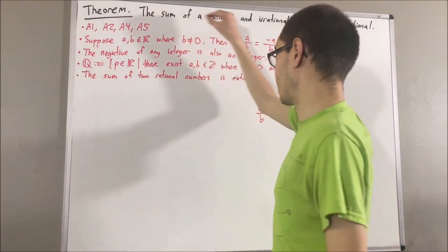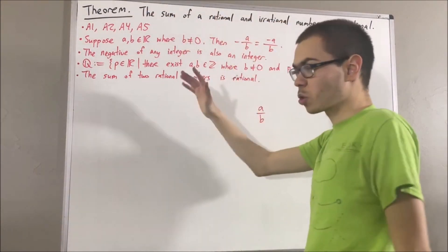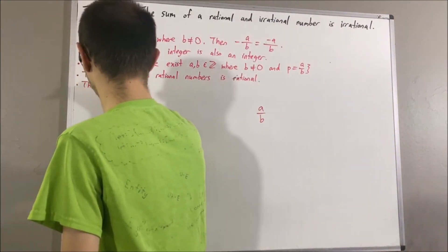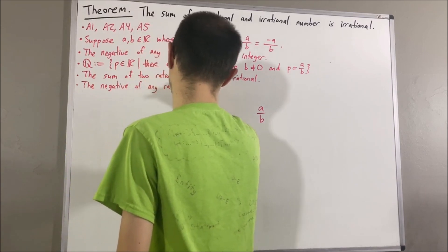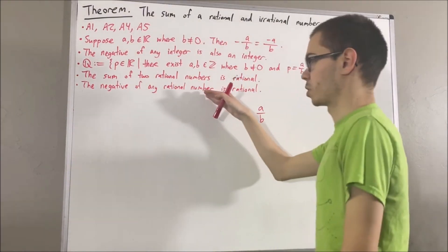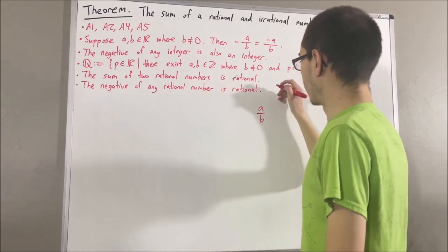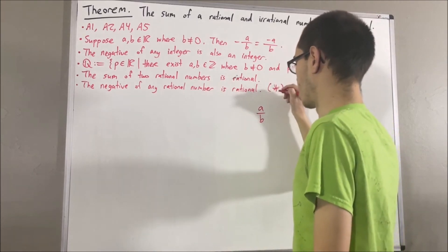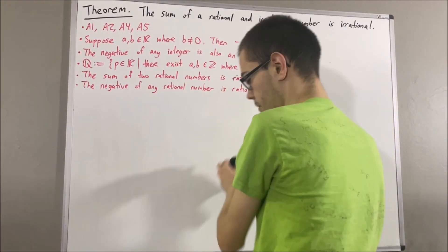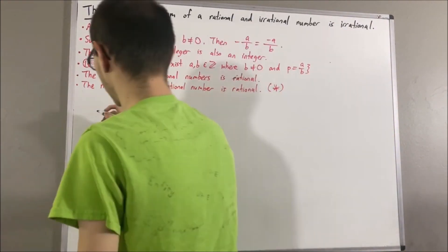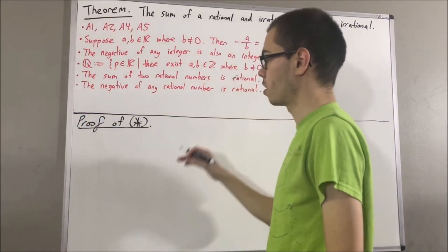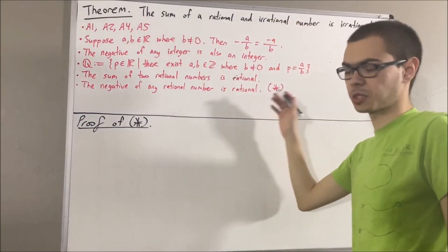Before we get into proving the main theorem, we are first going to prove a preliminary result, which is the following: we're going to prove that the negative of any rational number is rational, and I'm going to call this result star. So let's first prove star. To prove star, let's give ourselves an arbitrary rational number p.